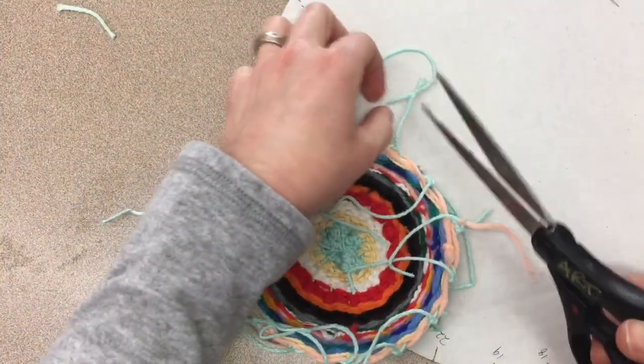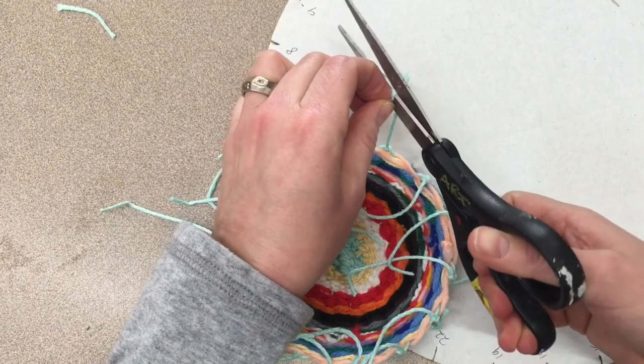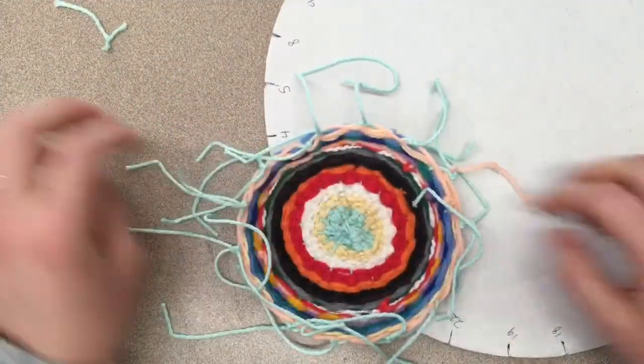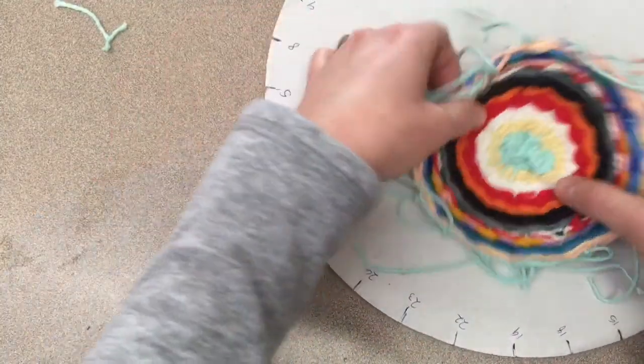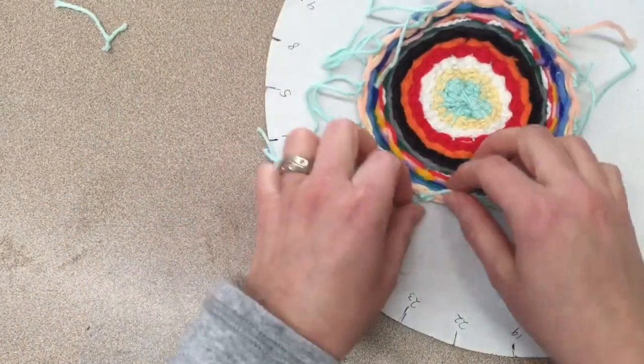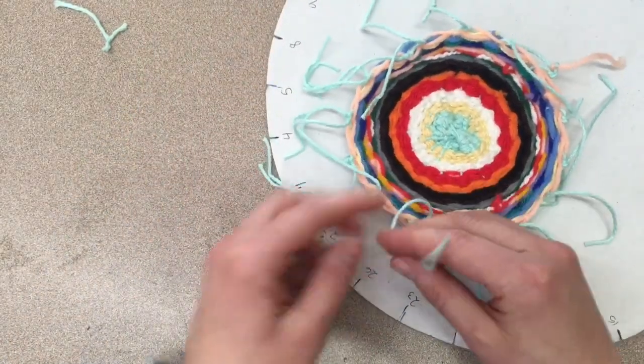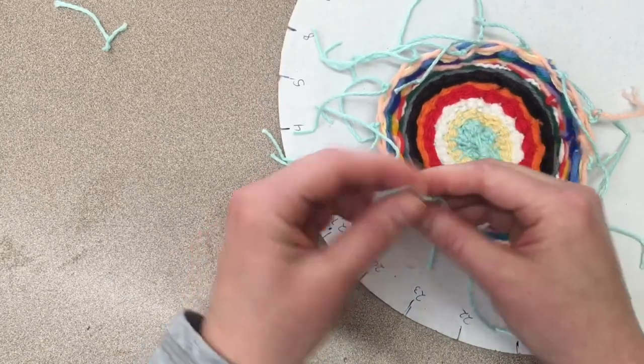You have a couple options with your leftover strings that are hanging down. You could leave them if you like the way that looks. You could continue knotting them to make it look decorative, so a bunch of knots on top of each other.